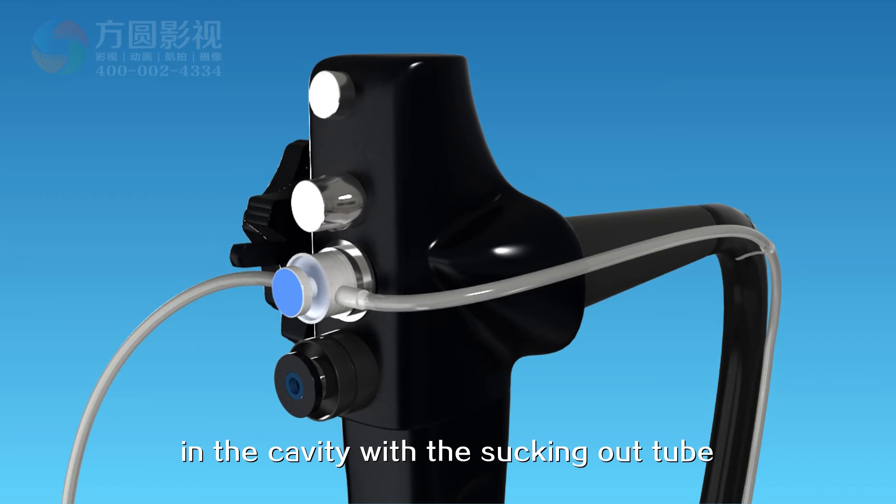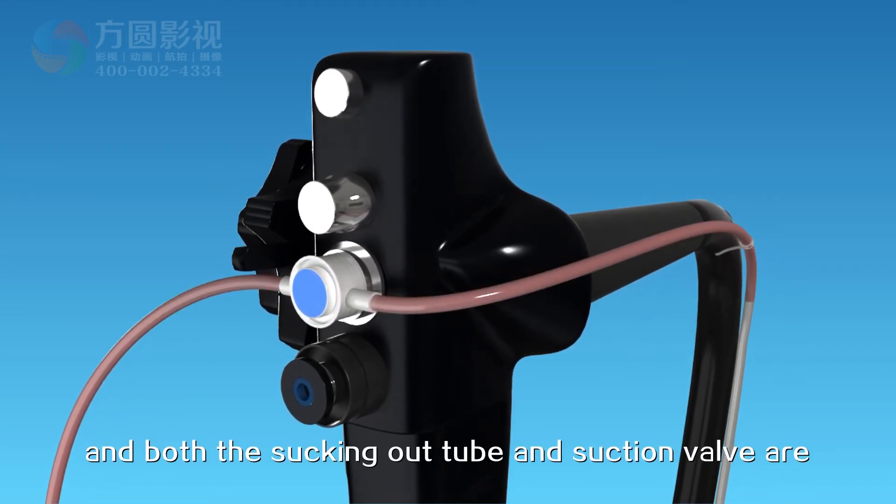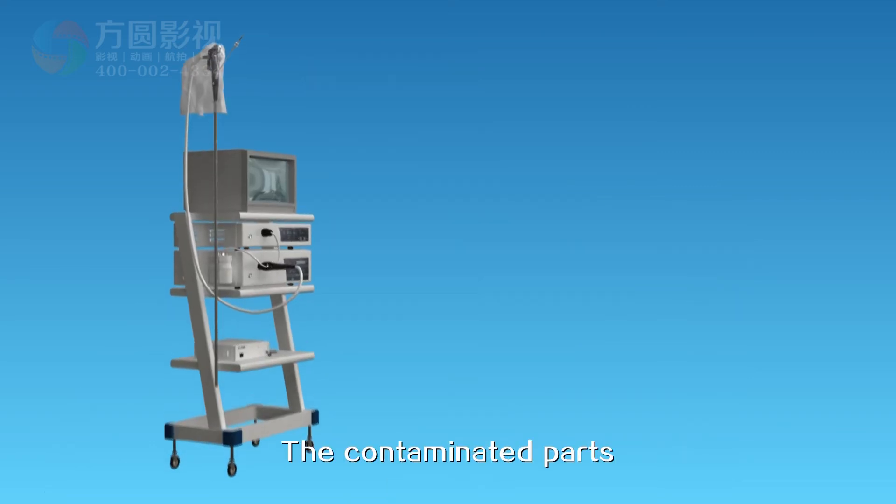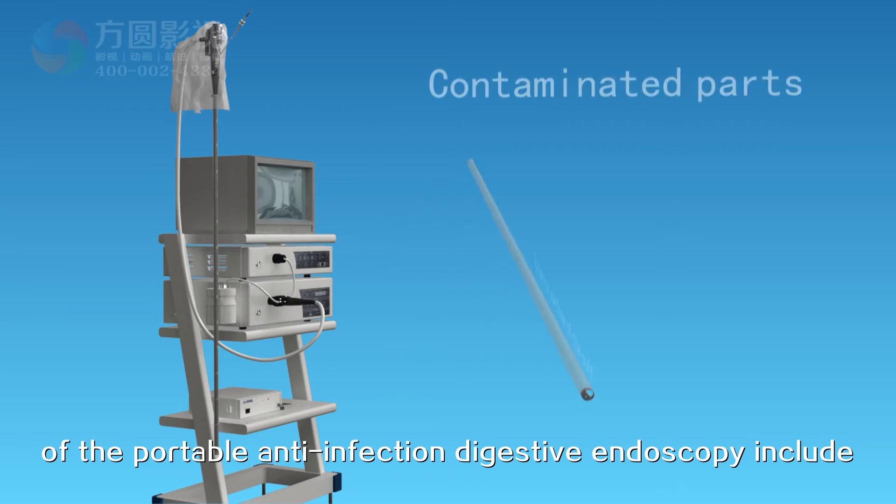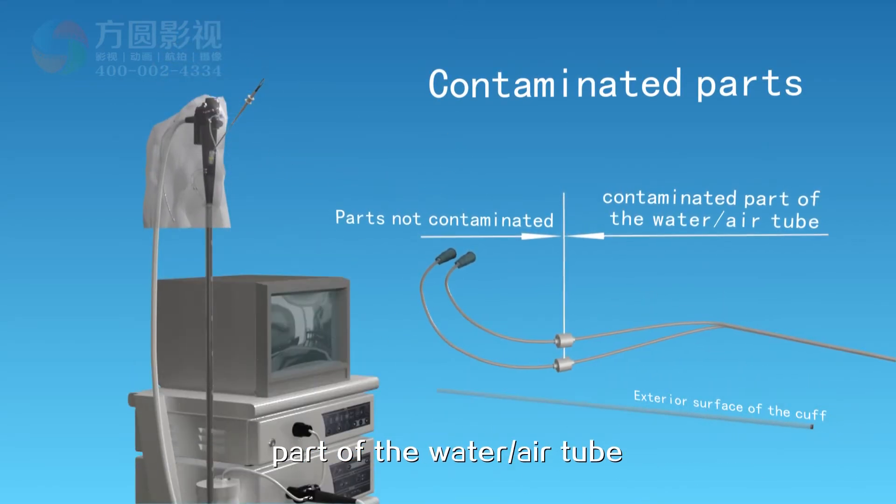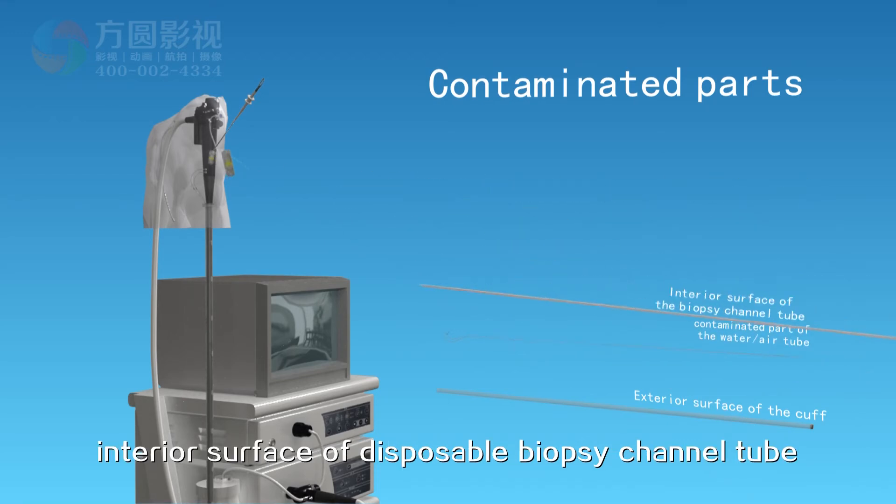Press the suction valve to suck out the fluid in the cavity with the sucking out tube. Both the sucking out tube and suction valve are on the outside of the lens body to benefit one-time use. The contaminated parts include the exterior surface of the disposable rubber cuff, part of the water air tube, and interior surface of the disposable biopsy channel tube.